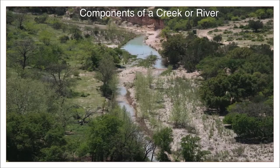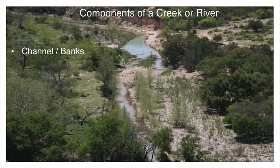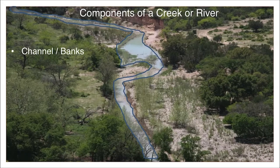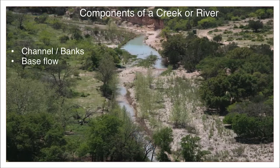In order to learn how a creek operates, it's important to consider all the parts. The primary part is the channel, which is confined by the banks. Water flowing within the channel most of the time is called base flow. This normal level of flow is sustained by water released from the banks and springs.